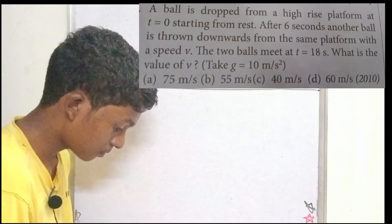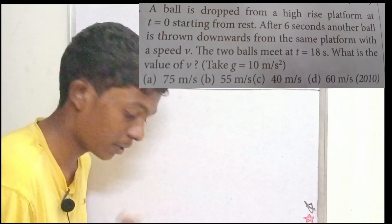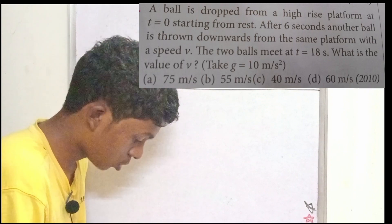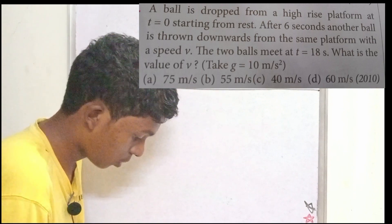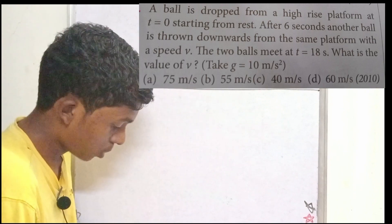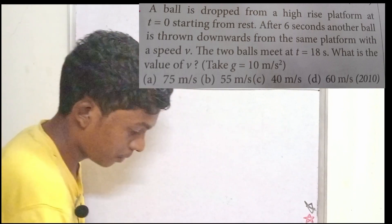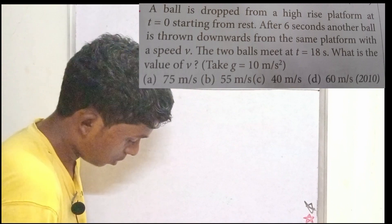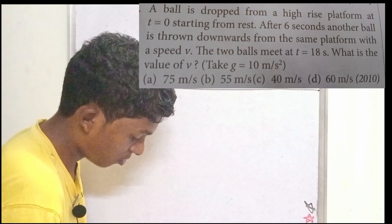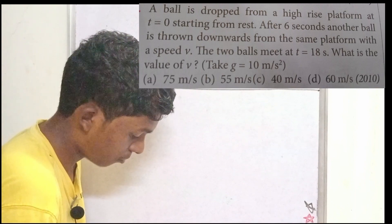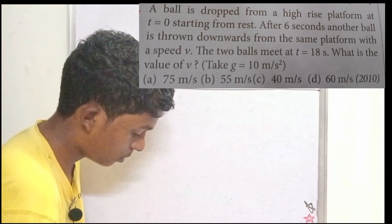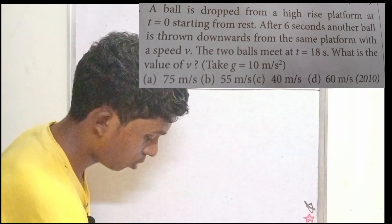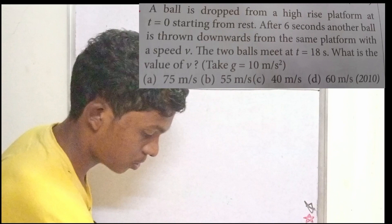So let's start with the first question from 2010. A ball is dropped from a high-rise platform at T equal to 0 from rest.